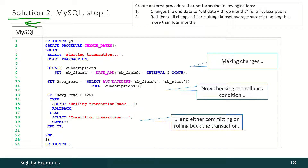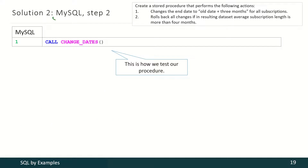Inside the procedure we have to start the transaction, then we have to update the data, then we have to calculate the average subscription length, and if it is more than 4 months we have to roll back the transaction; otherwise we have to commit the transaction. And that's all. To test the procedure in MySQL we just have to execute such a simple query.